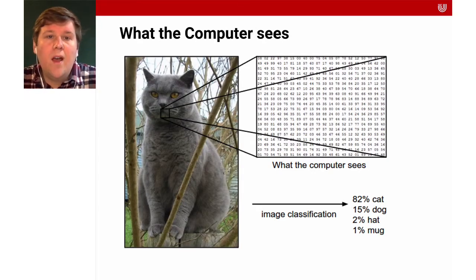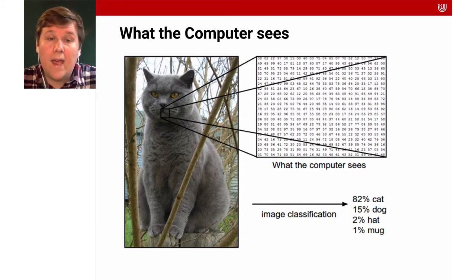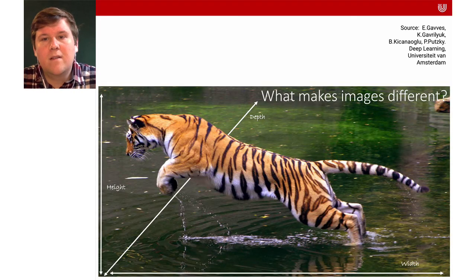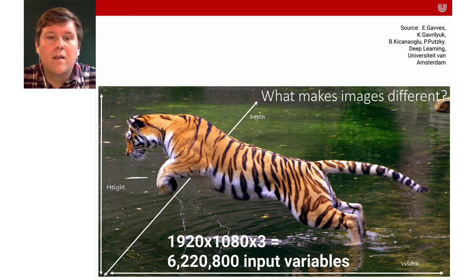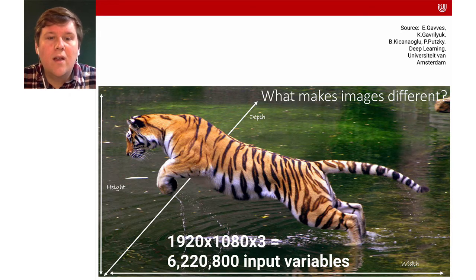What we see in an image and what the computer sees is fundamentally different. The computer sees X, Y, and the different color channels. Images have a height, a width, and also a depth — which comes from the 3D nature of reality. And it's quite a lot of data: if we have an HD image with three color channels, that's more than 6 million input variables already.